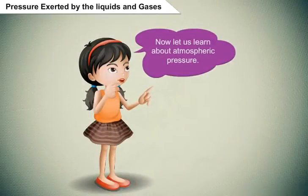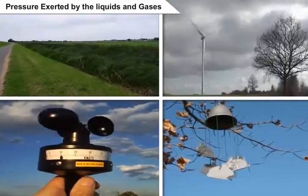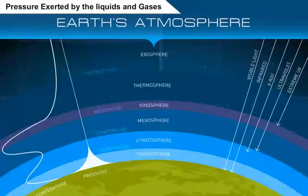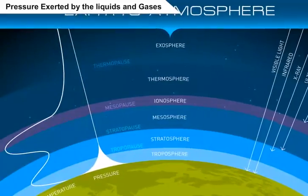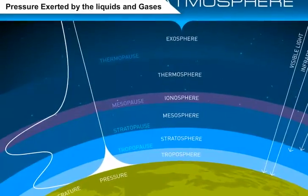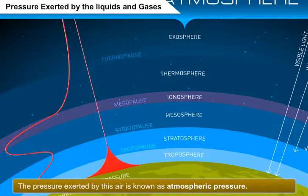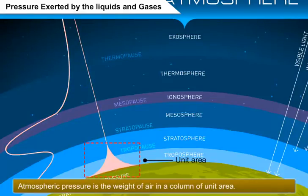Now let us learn about atmospheric pressure. As we all know, air is present all around us. This envelope of air is known as the atmosphere. The atmospheric air extends up to many kilometers above the surface of the earth. The pressure exerted by this air is known as atmospheric pressure. Atmospheric pressure is the weight of air in a column of unit area.